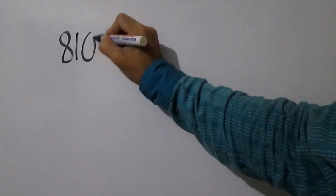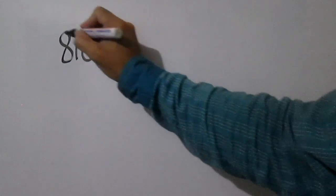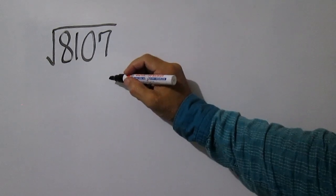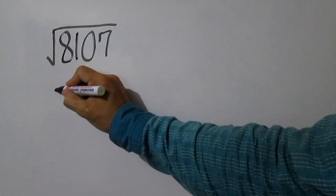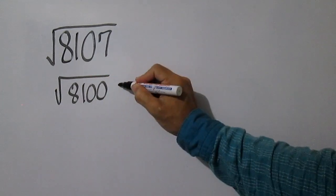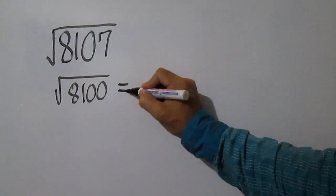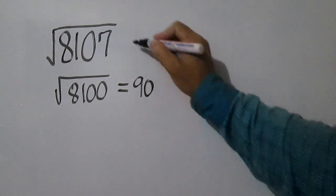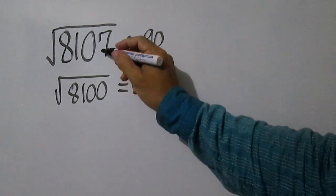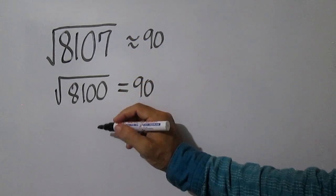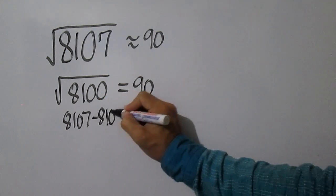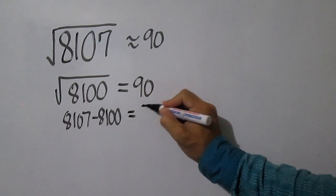Square root of 8,107. The closest perfect square less than 8,107 is 8,100, and the square root of 8,100 is 90. 8,107 minus 8,100 is equal to 7.